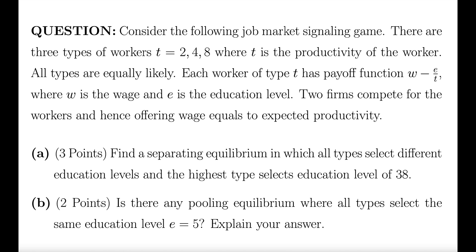Consider the following job market signaling game. There are three types of workers: T equals 2, 4, 8, where T is the productivity of the worker. All types are equally likely. Each worker of type T has payoff function W minus E divided by T, where W is the wage and E is the education level. Two firms compete for the workers and hence offer wage equal to expected productivity. And the second part of the question: is there any pooling equilibrium where all types select the same education level E equals 5? Explain your answer.